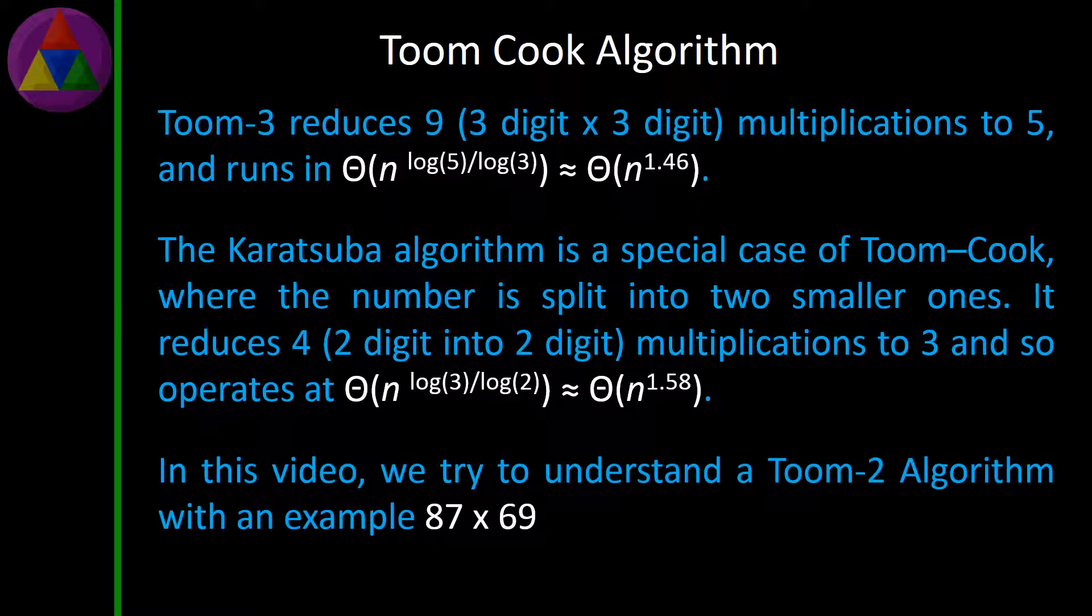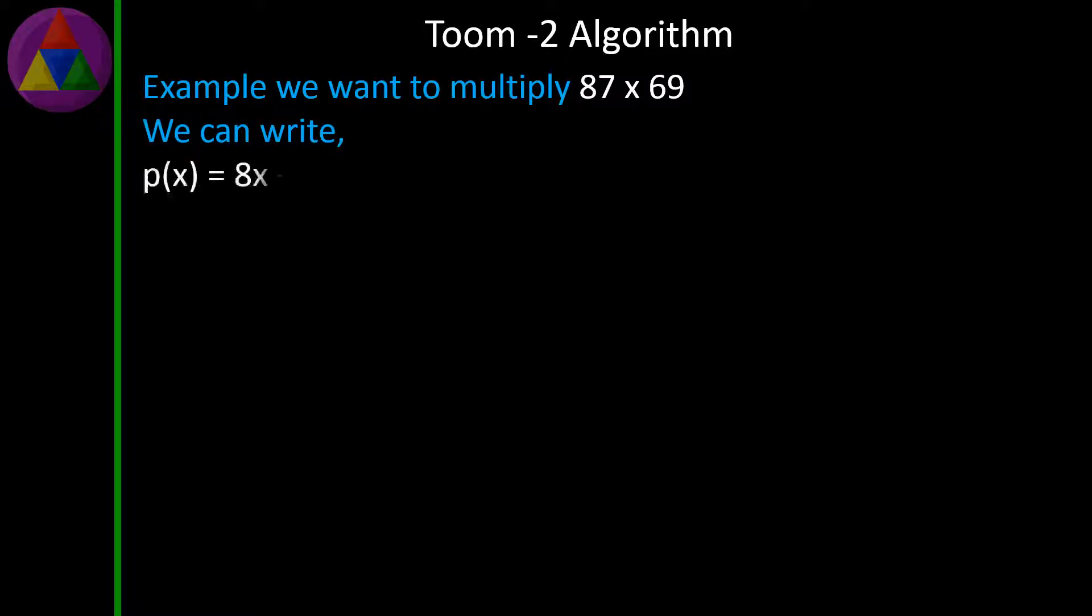In this video we try to understand a Toom-2 algorithm with an example 87 × 69. We can write P = 8x + 7.